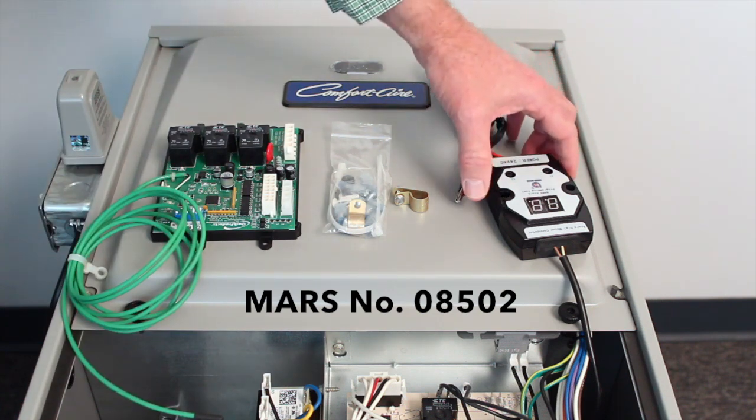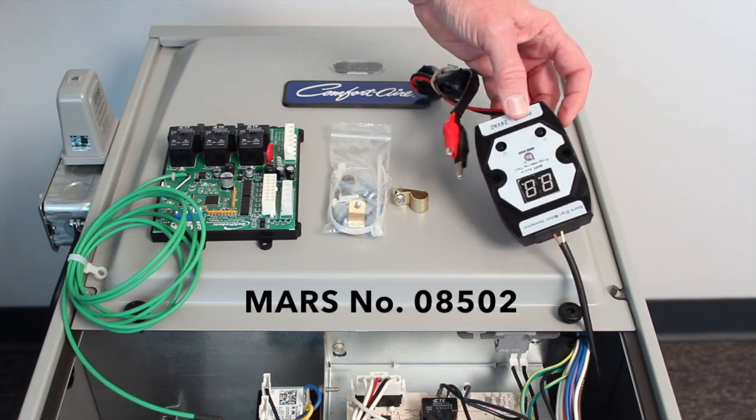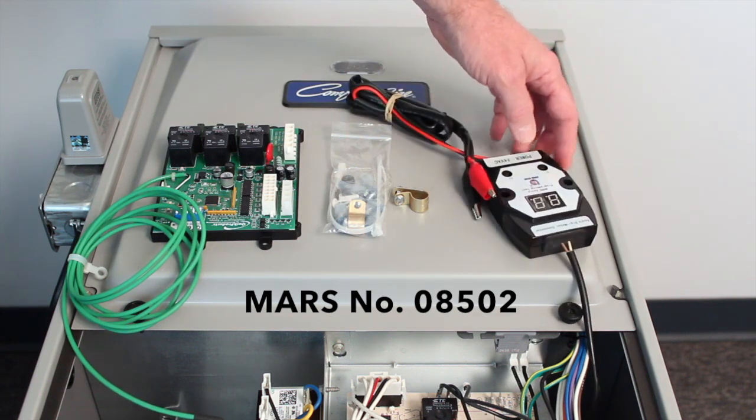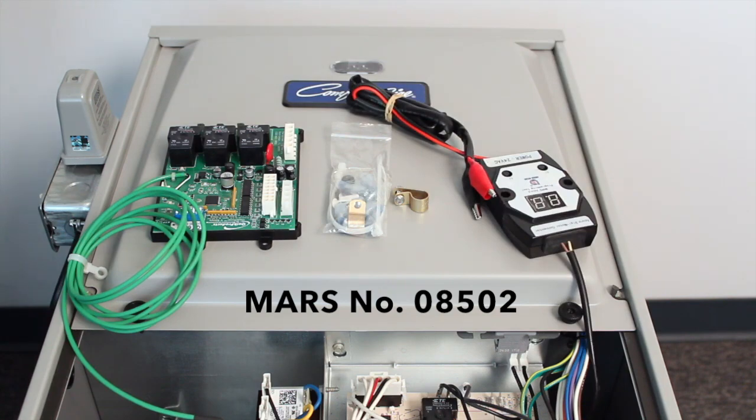Lastly, if you don't have perfect air flow in any of the three speed taps, you can use the optional handheld programmer to dial in the CFM during your heat rise tests. And that's all there is to installing the QuickSwap Azure board.